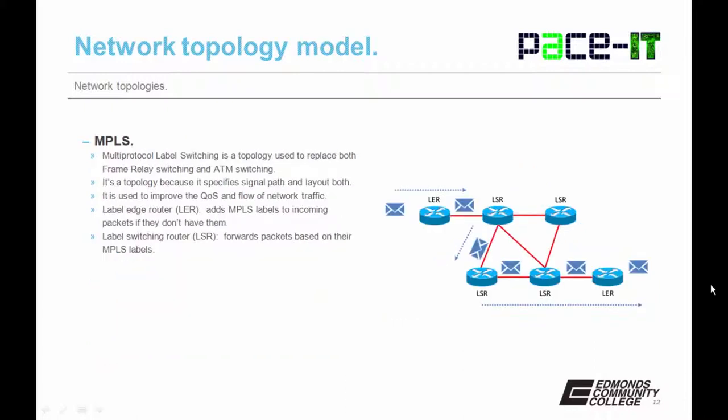Now let's discuss MPLS — multi-protocol label switching. It is a topology used to replace both frame relay switching and ATM switching. It's a topology because it specifies a signal path and layout. MPLS is used to improve the quality of service and flow of network traffic. It uses label edge routers (LERs), which add MPLS labels to incoming packets if they don't already have them. The LERs pass the packets along to label switching routers (LSRs), which forward packets based on their MPLS labels — that's what makes this a topology.